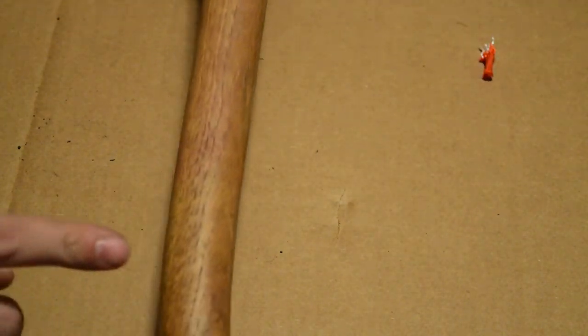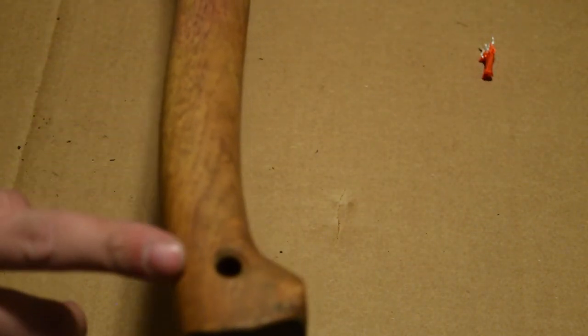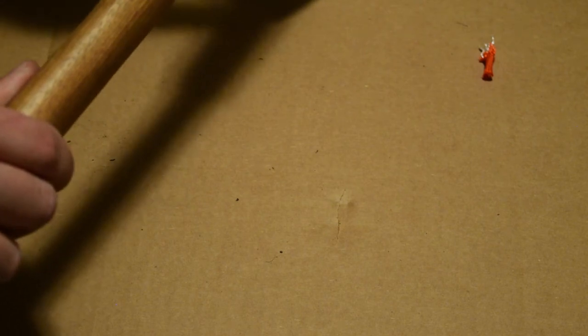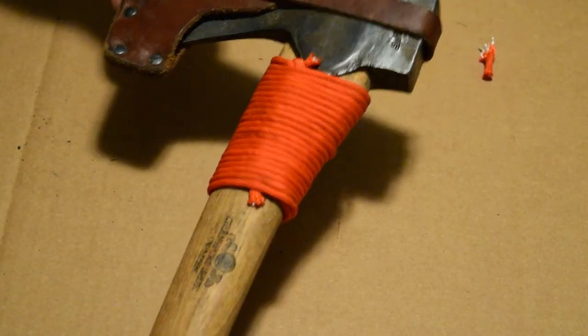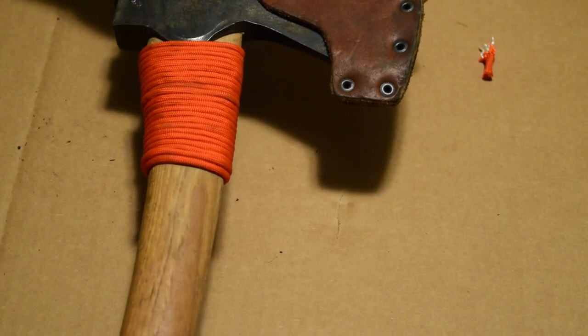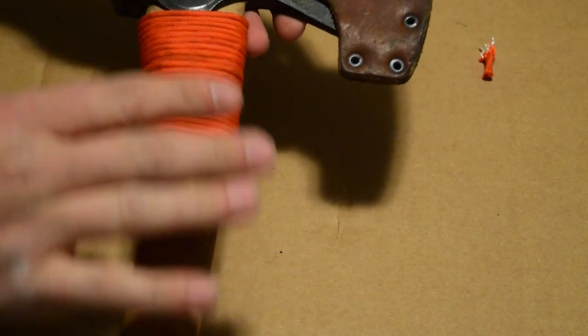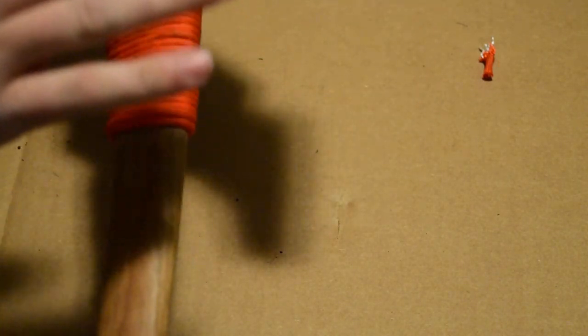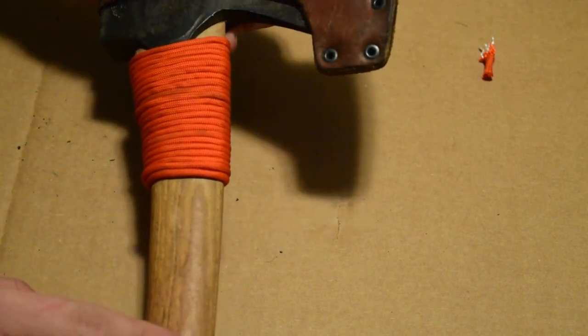I could actually wrap the very end of this handle if I wanted to as well. But I think I'm just going to go ahead and leave that just like that. I think that looks pretty good. It's always nice to have a nice little emergency stash paracord when you need it. And also protecting your axe against overswings.